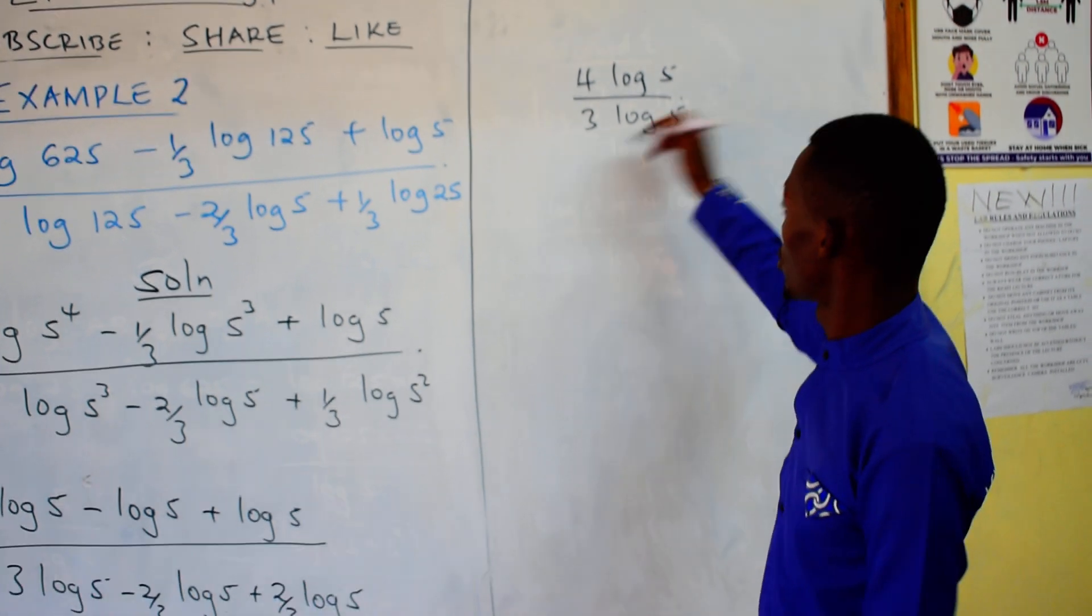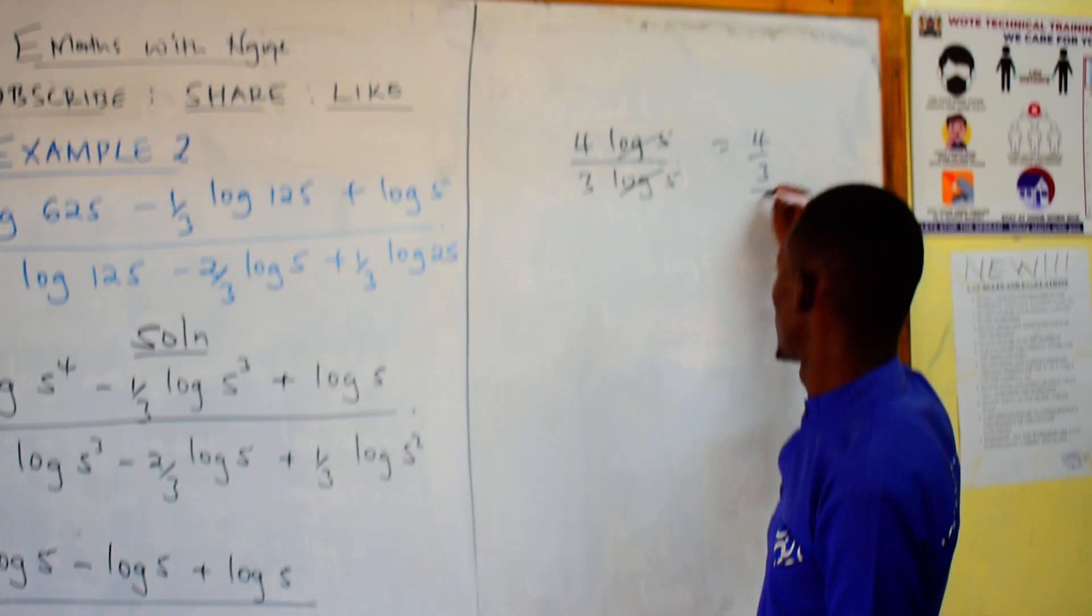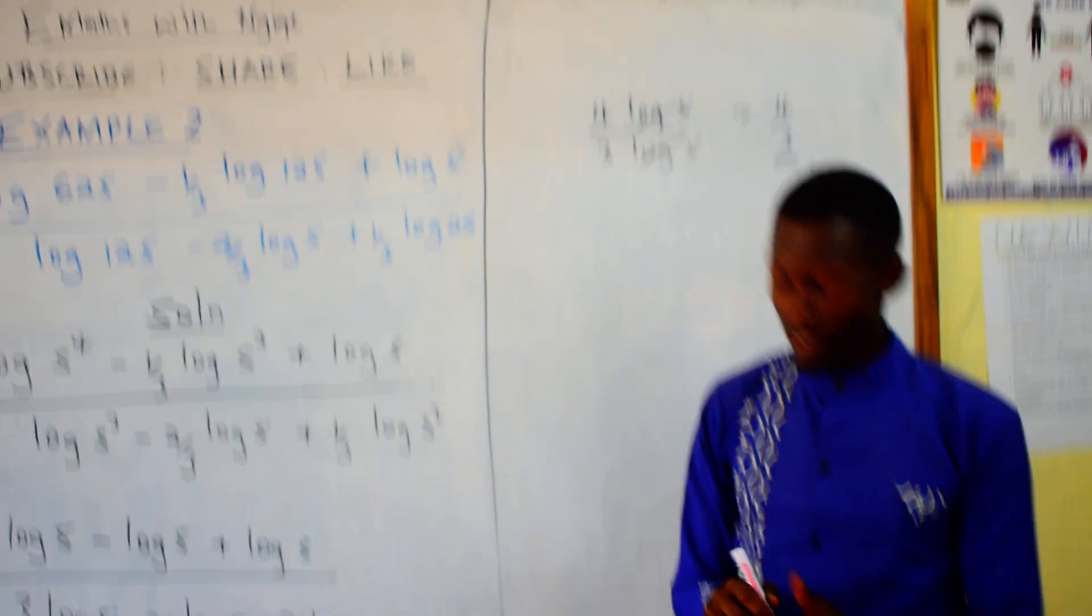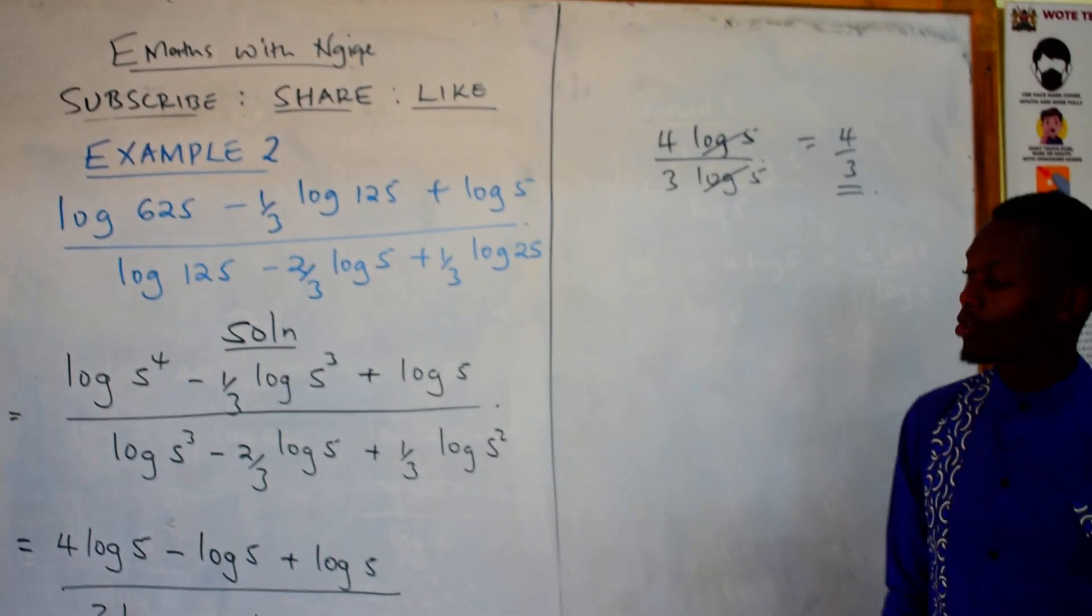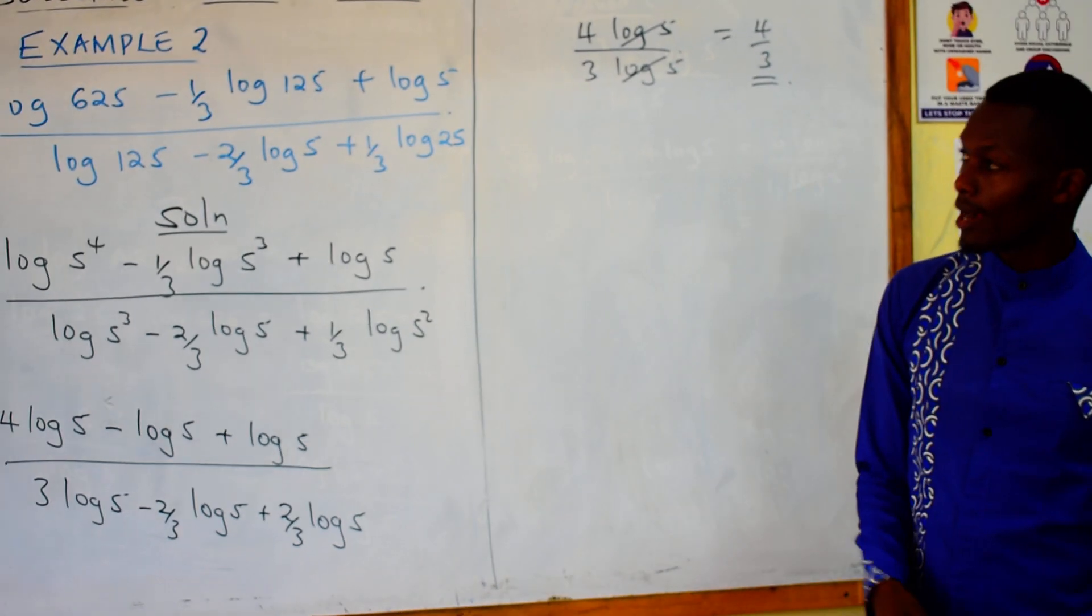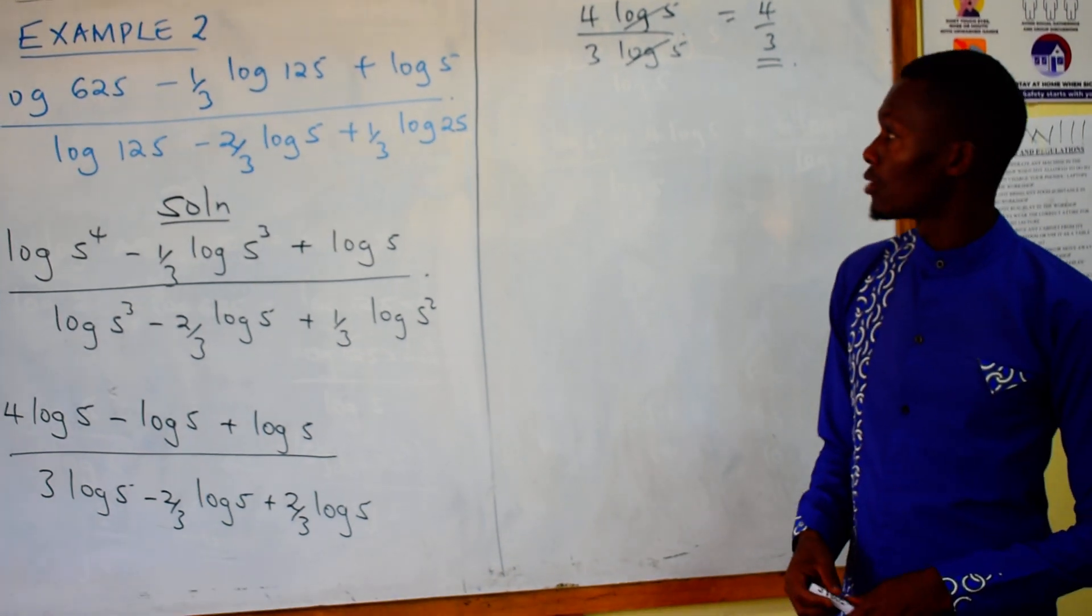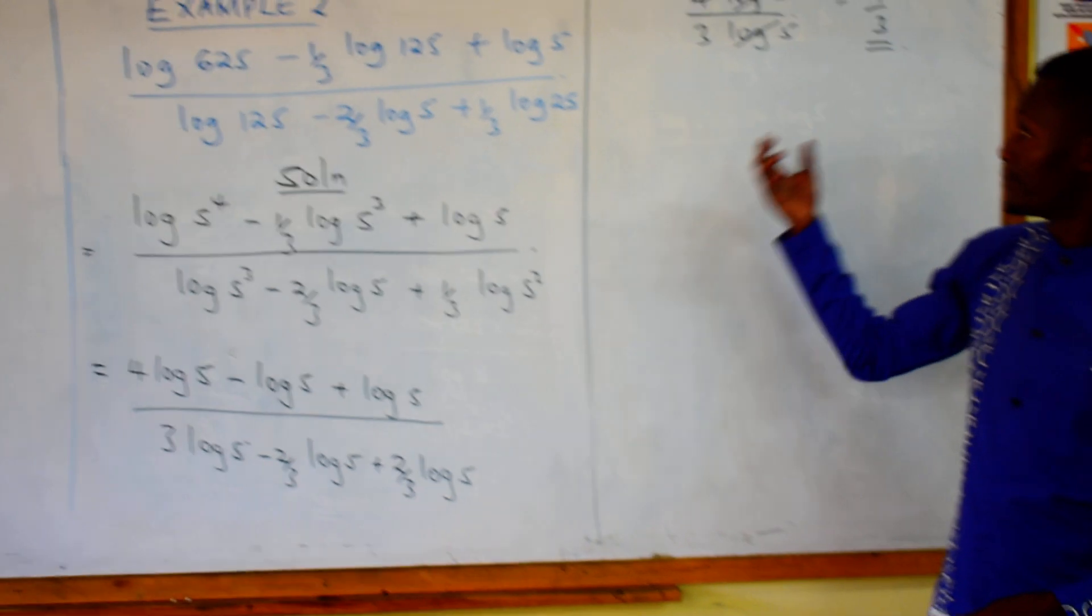So therefore, in short, we remain with 4 over 3 as solution. So application in logarithms can be this simple, as long as you really understand how to use the laws of logarithms.